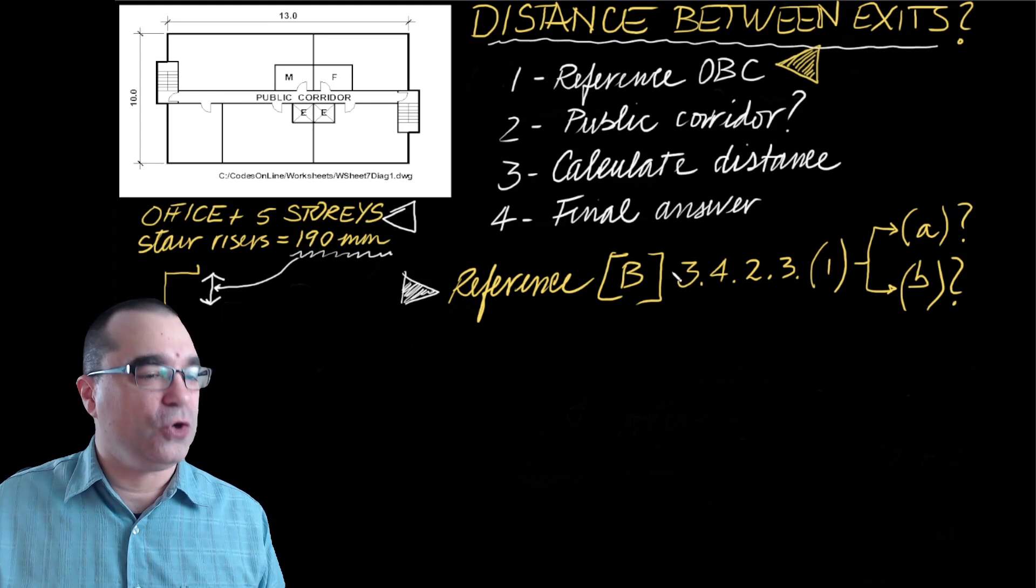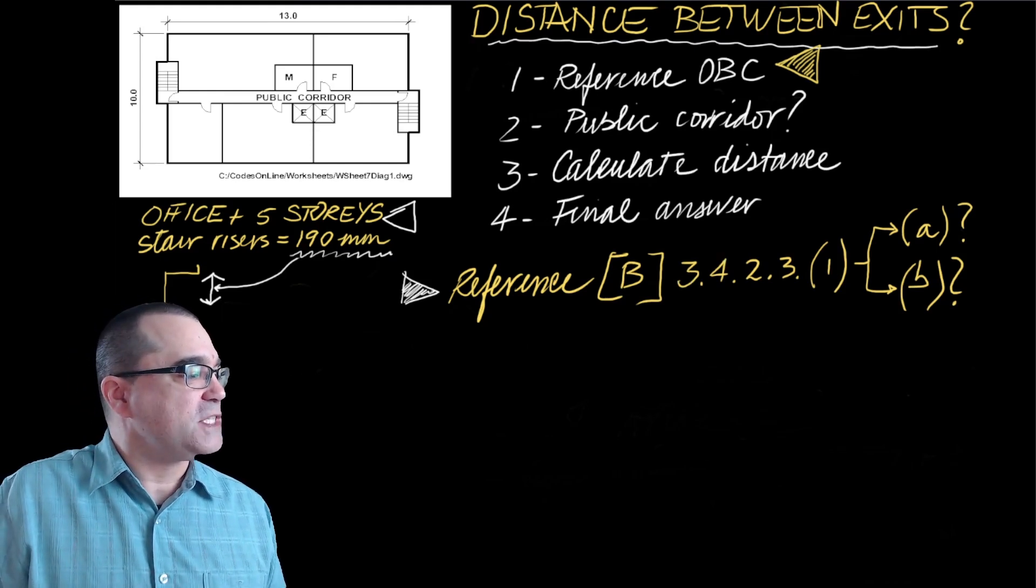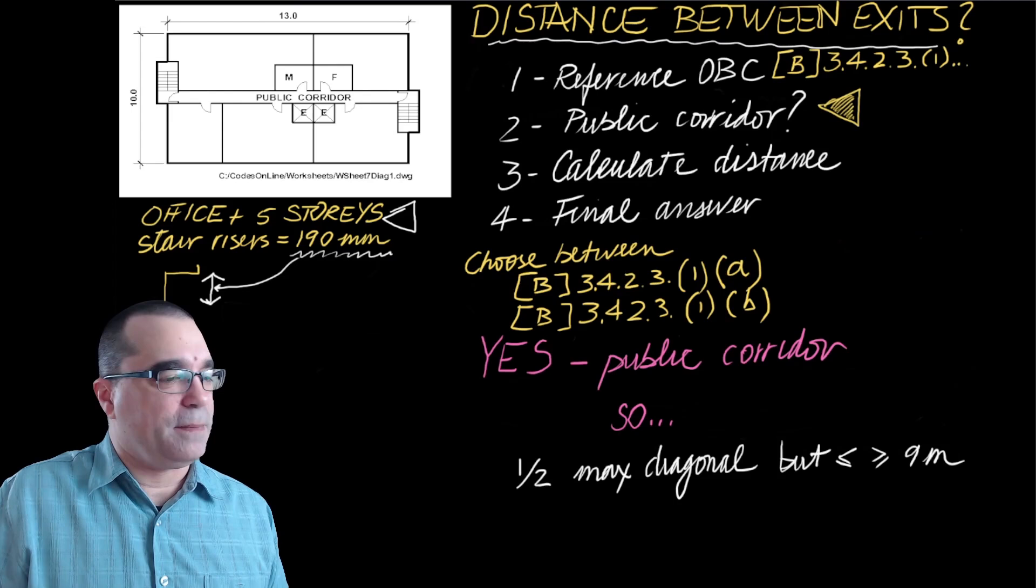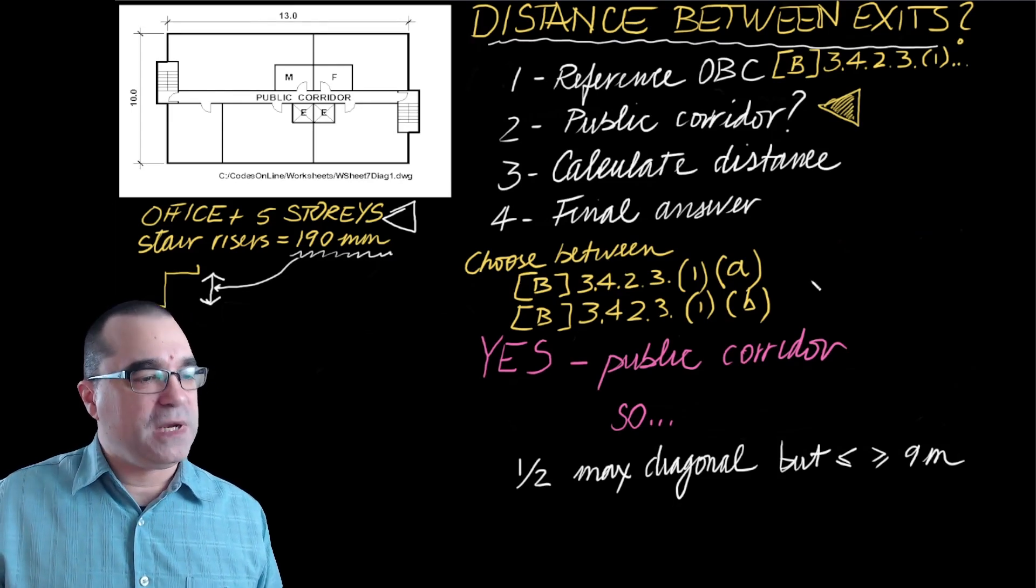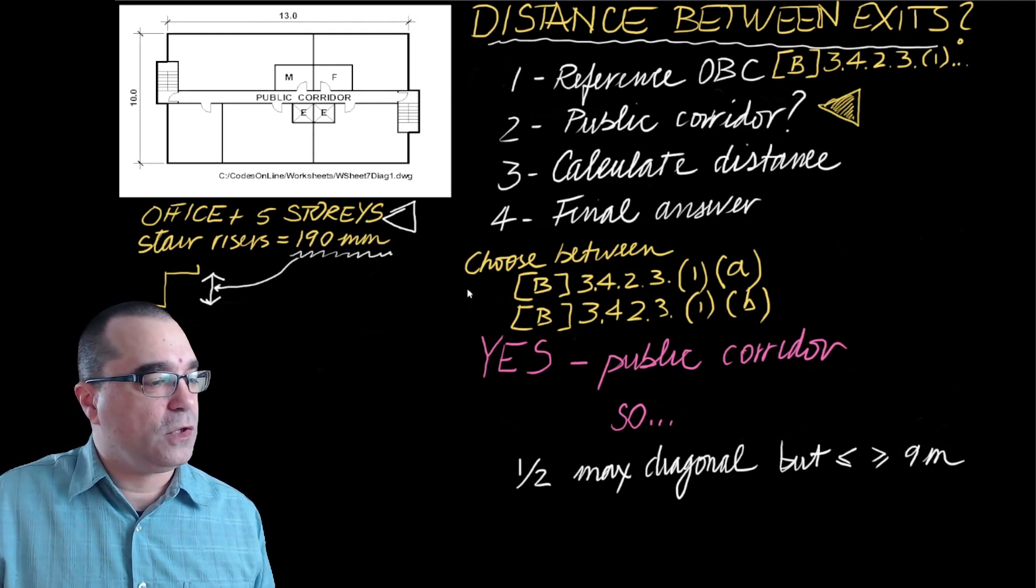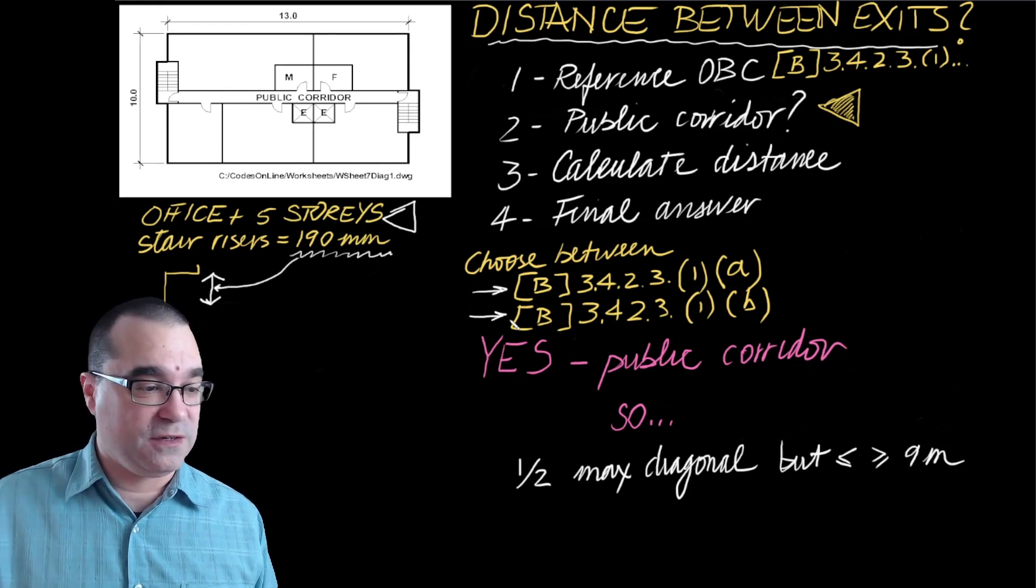The way that we figure that out is whether or not there is a public corridor. So that's where step number two comes into play. Whether or not there is a public corridor helps us figure out whether we're going to be using this clause or this clause.